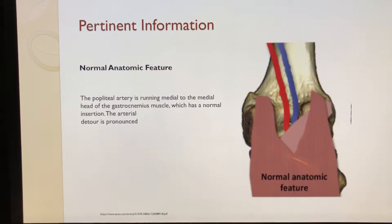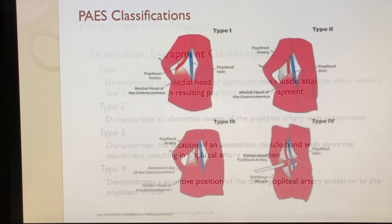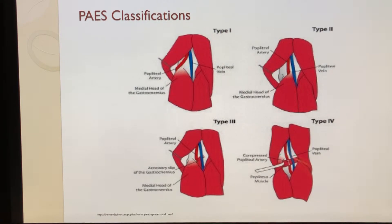This graphic shows what normal anatomy should look like — the popliteal artery runs medially to the medial head of the gastrocnemius muscle. There are four basic entrapment classifications for PAES. Type 1 demonstrates the medial head of the gastrocnemius attaching more laterally. Type 2 demonstrates an abnormal course of the popliteal artery with entrapment. Type 3 demonstrates an abnormal muscle band attachment, and Type 4 demonstrates the distal popliteal artery coursing posteriorly to the popliteus muscle. There are a few other classification types, but these are the four primary ones.